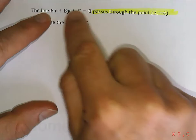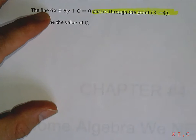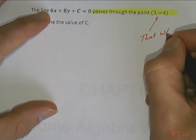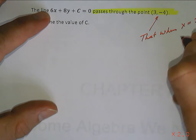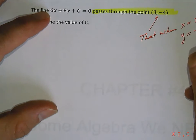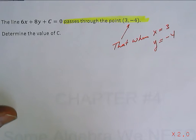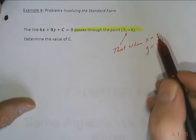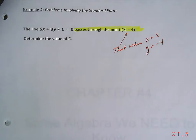You have to understand something. If I tell you that a point lies on the line, what I'm telling you is that when x equals 3, y equals negative 4. So when I tell you that a point lies on a line, I'm actually giving you an x value and a y value that are related to each other.